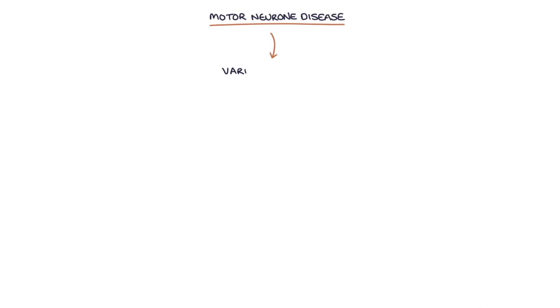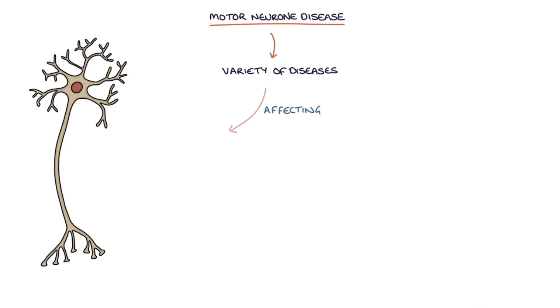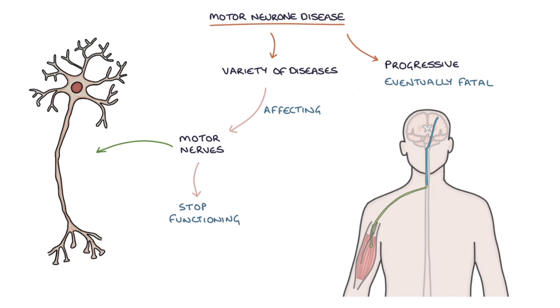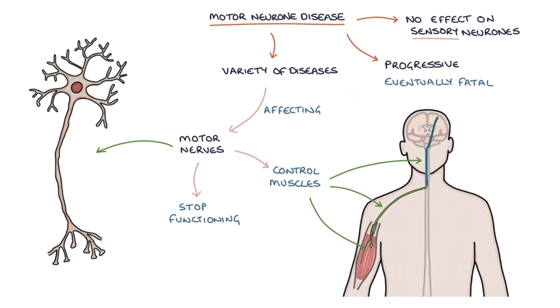Motor neuron disease is a term that encompasses a variety of specific diseases affecting the motor nerves. It is a progressive, eventually fatal condition where the motor neurons stop functioning. The motor neurons are responsible for controlling muscles and muscle movement. Motor neuron disease has no effect on the sensory neurons, meaning that sensation is normal and intact. The presence of sensory symptoms suggests an alternative diagnosis.